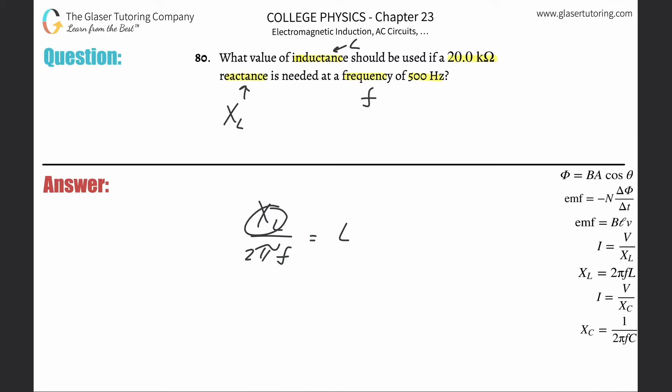The inductive reactance here is in ohms. They gave it to us in kilohms, so multiply that by 10 to the third, then divide that by 2π. Now the frequency—it's in hertz, so that's fine, nothing to change. Remember, that's basically cycles per second.